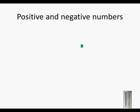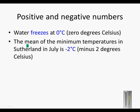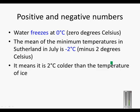Positive and negative numbers. Water freezes at zero degrees Celsius. The mean, or average, of the minimum temperatures in Sutherland in July is minus two degrees Celsius. Sutherland is a little town in the Northern Cape, and it gets really cold there — so the average minimum temperature in Sutherland is two degrees Celsius colder than the temperature of ice.